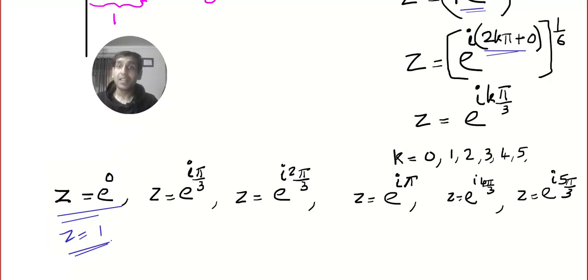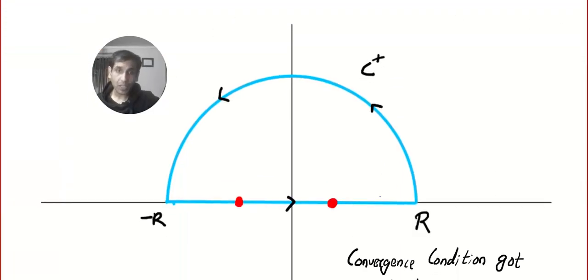And where is it? Yeah, e to the power i·pi. e to the power i·pi is actually cos(pi) plus i·sin(pi), and cos(pi) is minus 1 and sin(pi) is 0. So can you see, these two are going to give trouble.